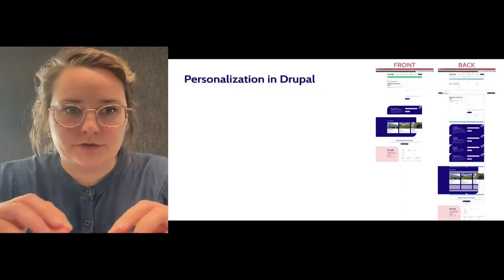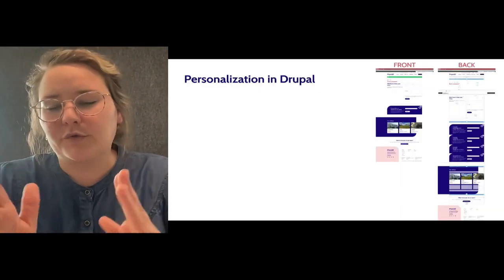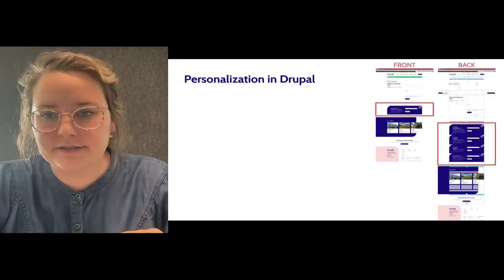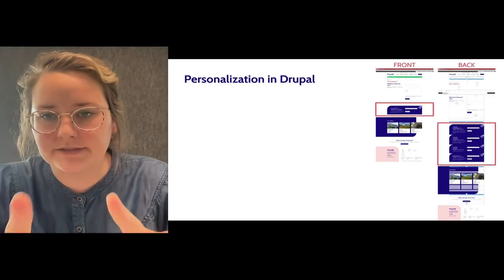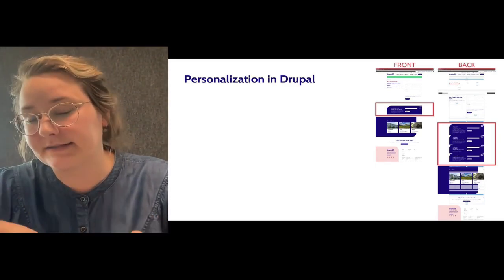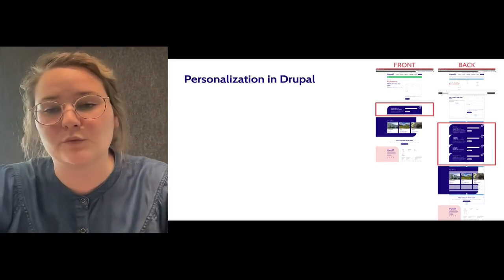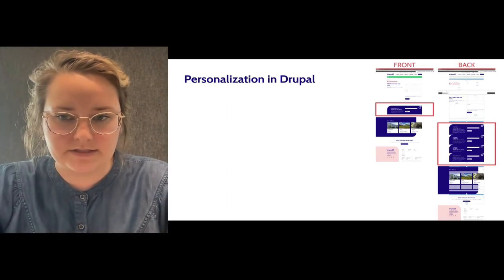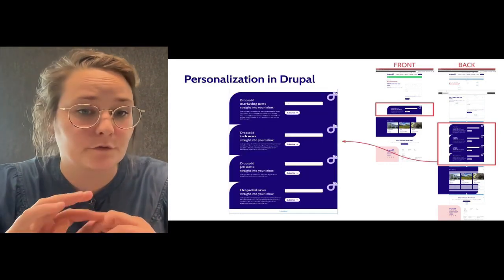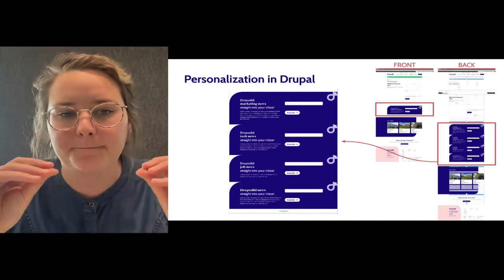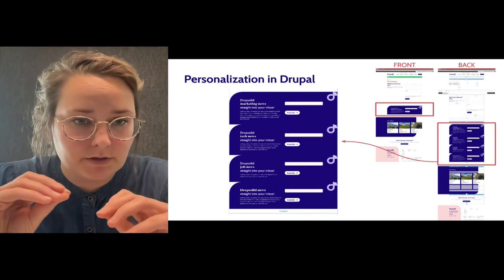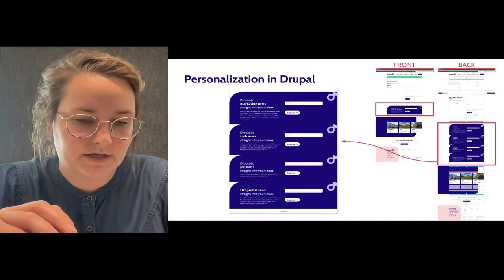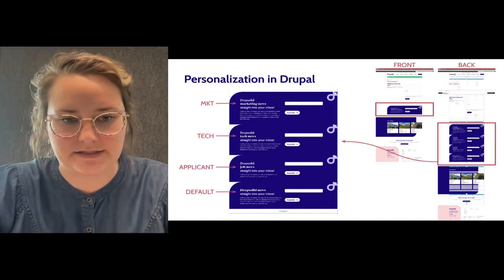First we start with Drupal. In Drupal, you have the front that people see, and you have the back that I'm working on with Layout Builder. The main difference — I put a red square around it — is the blue box. When you visit our website you only see one box, but in the back I put four different boxes. You can see there are four different boxes: DropSolid marketing news, tech news, job news, and the default version — so you can see the four segments again.